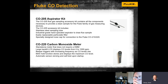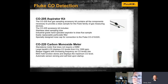Now let's talk about carbon monoxide. The Fluke CO220 is a carbon monoxide meter, and there is also the 205 aspirator that connects to the 220. This allows you to do a handheld walk-in capture of carbon monoxide measurements. If you need to do flue gas measurements, you can use the aspirator kit, insert it, check what your flue gas is doing, and make analysis on that.